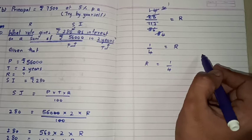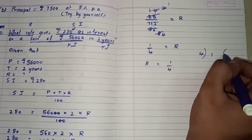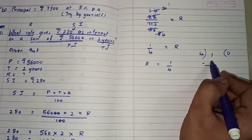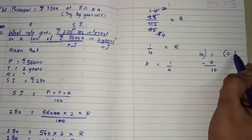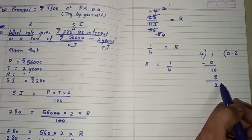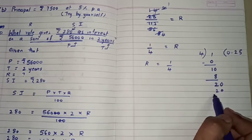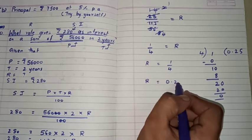Toh humare paas 1 by 4 is equal, toh R is equal to 0.25. The rate value humaree pass a gaya 0.25.